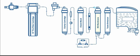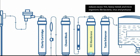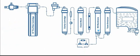From there, water goes to the RO membrane, which reduces excess total dissolved solids, heavy metals, and microorganisms like bacteria, virus, and protozoa. The waste water gets rejected, and pure water goes to the taste enhancer.